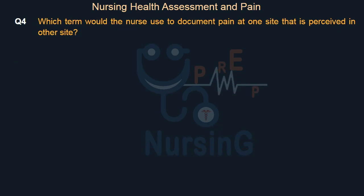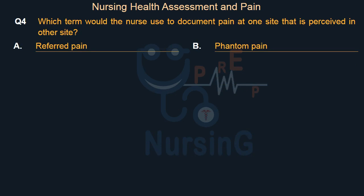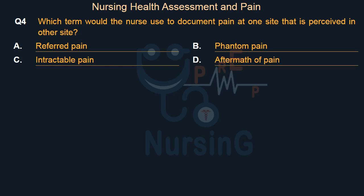Which term would the nurse use to document pain at one site that is perceived at another site? Option A: Referred pain. Option B: Phantom pain. Option C: Intractable pain. Option D: Aftermath of pain.